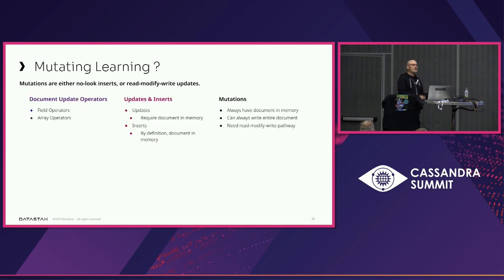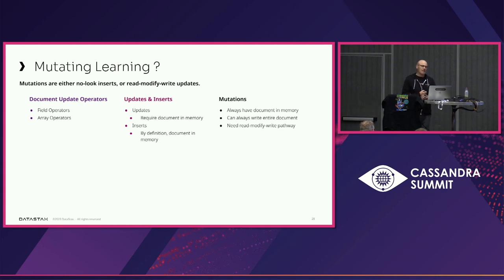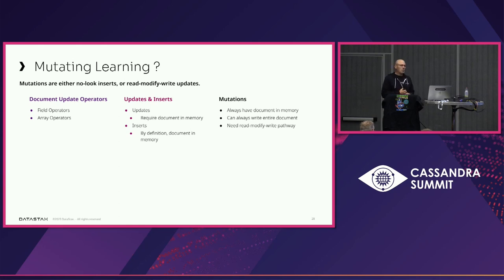So what did we learn? Documents have updates on fields and arrays. Updates require the document in memory because we have to make read-modify-write decisions based on current document state. Inserts by definition already have the document in memory, so from a Cassandra point of view we can just keep rewriting things again and again because we always have it.